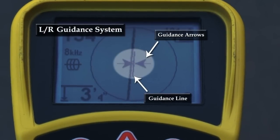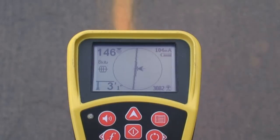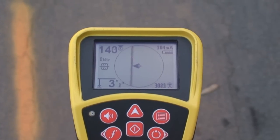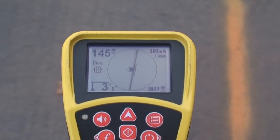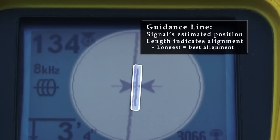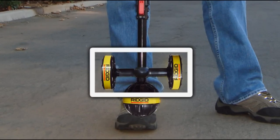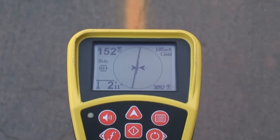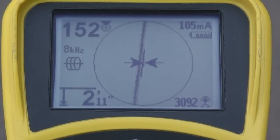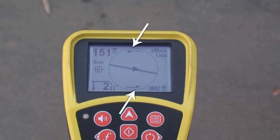Next we'll look at the left-right guidance system. This display element is independent from the tracing line and has two parts: the guidance arrows and the guidance line. When you move the receiver across the signal, the guidance arrows track the signal in real time, pointing in its estimated direction. When you're directly over the signal, the arrows will point inward to the center of the display. The guidance line serves two functions: it's a visual aid that helps you see where the guidance arrows place the signal's estimated position, and it helps you align the receiver with the signal. Unlike the tracing line, the guidance arrows are measured with highly directional antennas that are most accurate when aligned with the signal. The guidance line changes length to indicate your alignment — it will be longest when your alignment is best and will shrink as you become less aligned. When you're too far out of alignment, rotation arrows will appear to help you get the receiver back in alignment.